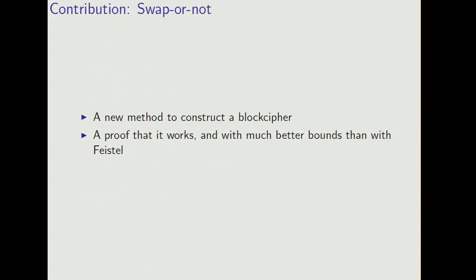In the talk, first I'll talk about how to construct swap-or-not, and then I'm going to demonstrate its appeal by turning to the problem of constructing a pseudorandom permutation from a pseudorandom function and show that with swap-or-not, you can prove better bounds than what you can do with Feistel.